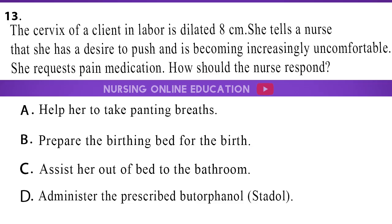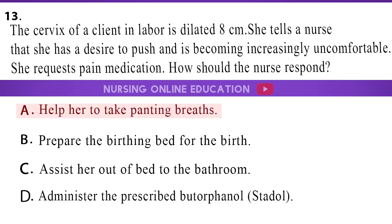Question 13: The cervix of a client in labor is dilated 8 cm. She tells a nurse that she has a desire to push and is becoming increasingly uncomfortable. She requests pain medication. How should the nurse respond? A. Help her to take panting breaths. B. Prepare the birthing bed for the birth. C. Assist her out of bed to the bathroom. D. Administer the prescribed butorphanol. The answer is option A: Help her to take panting breaths.